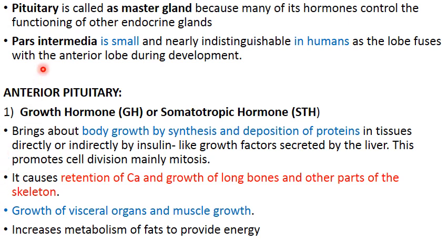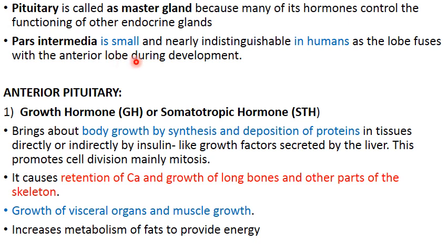The pituitary is called the master gland because many of its hormones go to other endocrine glands and control their functioning. The pars intermedia or intermediate lobe in humans is small and cannot be distinguished from the anterior pituitary because it fuses with it during development.